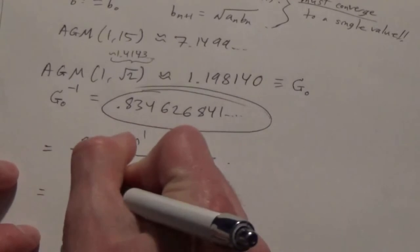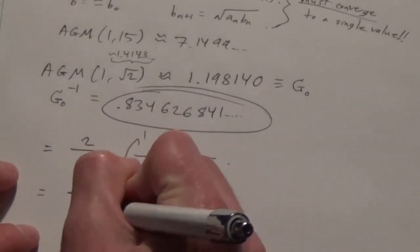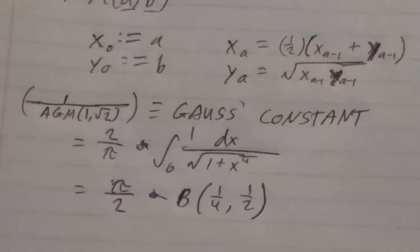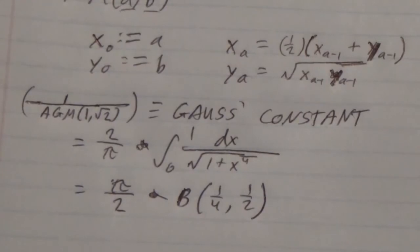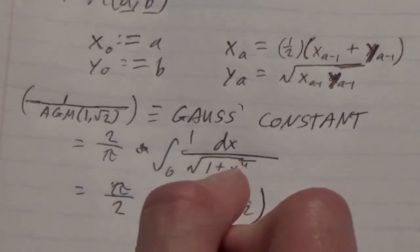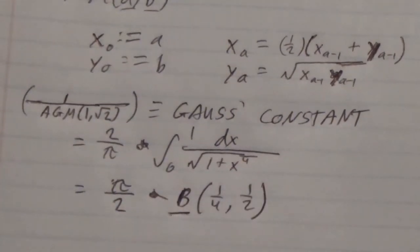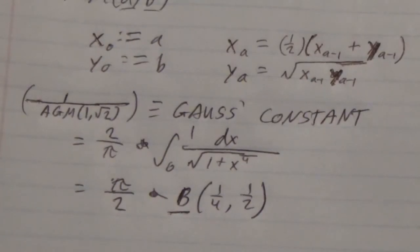And, as it turns out, we can consider it to be equal to pi over 2 times b of 1/4 comma 1/2, where this b is actually representative of the beta function. Now, the beta function is a very interesting special function, similar in fact to the gamma function, and it has many connections to the gamma function.